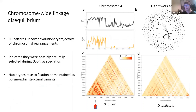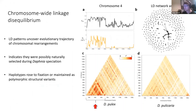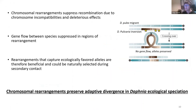We also used chromosome-wide linkage disequilibrium, and the LD patterns indicate that these rearrangement haplotypes rose to fixation or remain as polymorphic variants. Chromosome rearrangements suppress recombination, and during cross-species migration, these rearrangements would suppress gene flow. These rearrangements that capture ecologically favored alleles are therefore beneficial. Altogether, we've seen that these rearrangements have preserved the adaptive divergence in the Daphnia ecological speciation. Thank you.